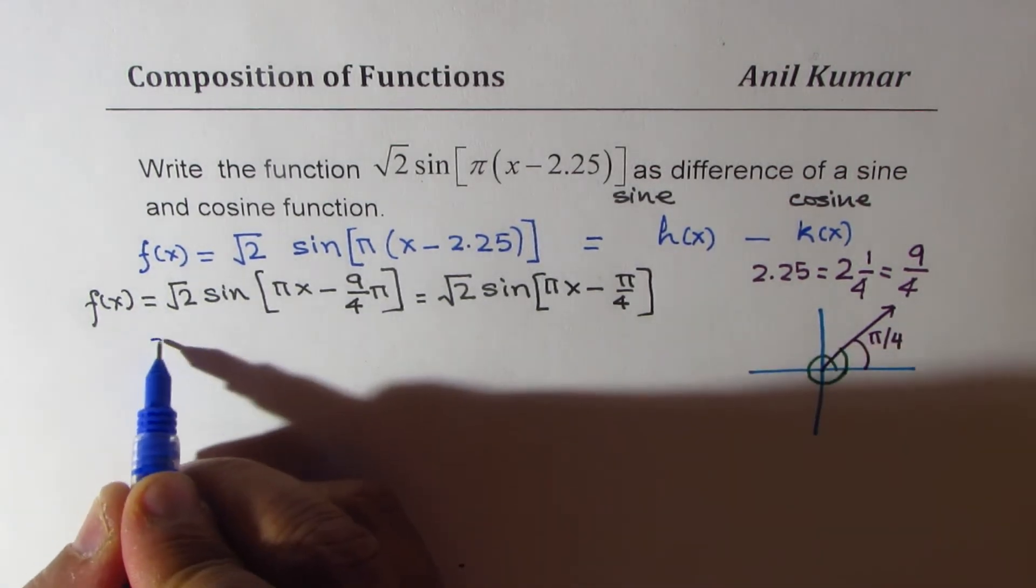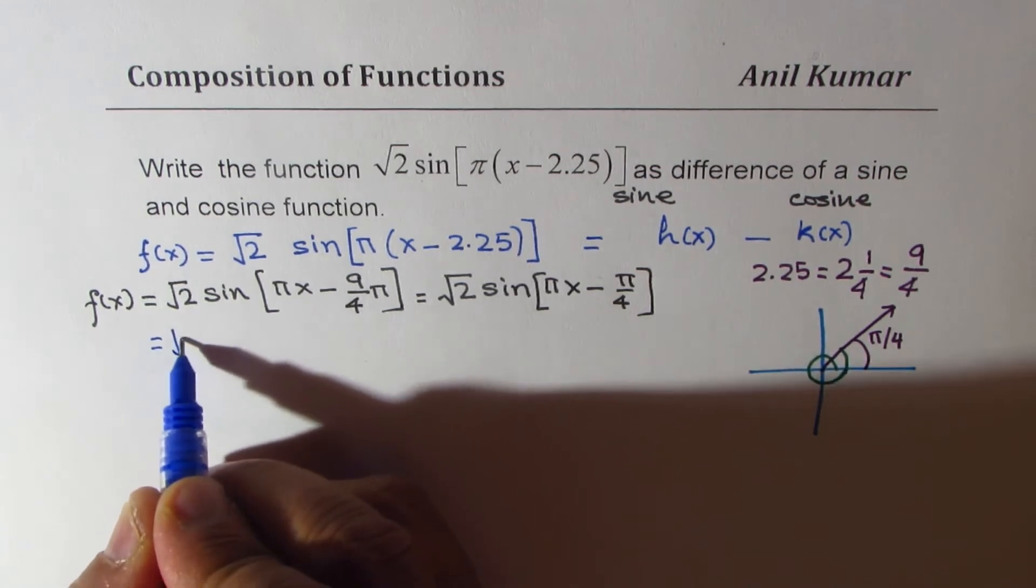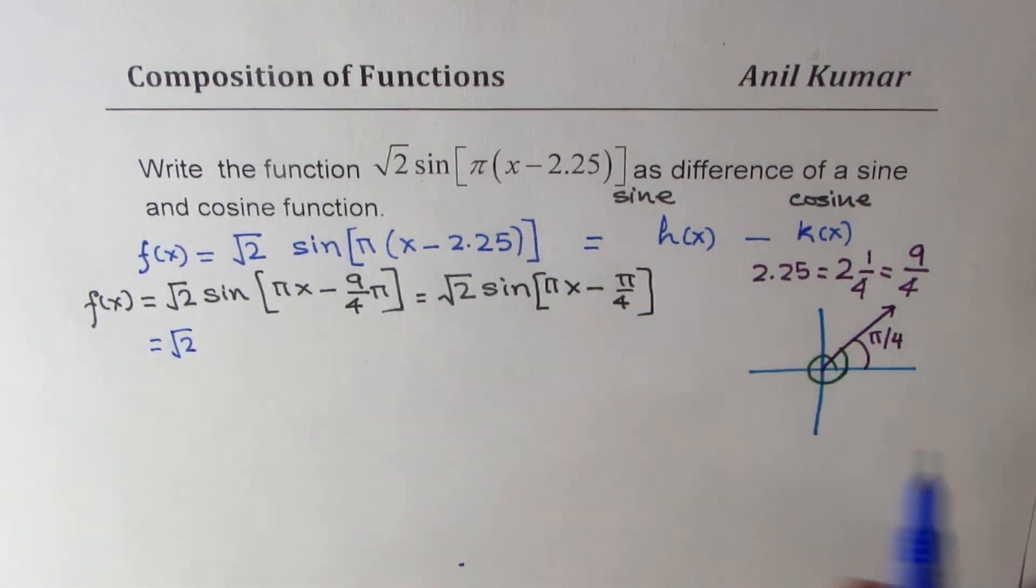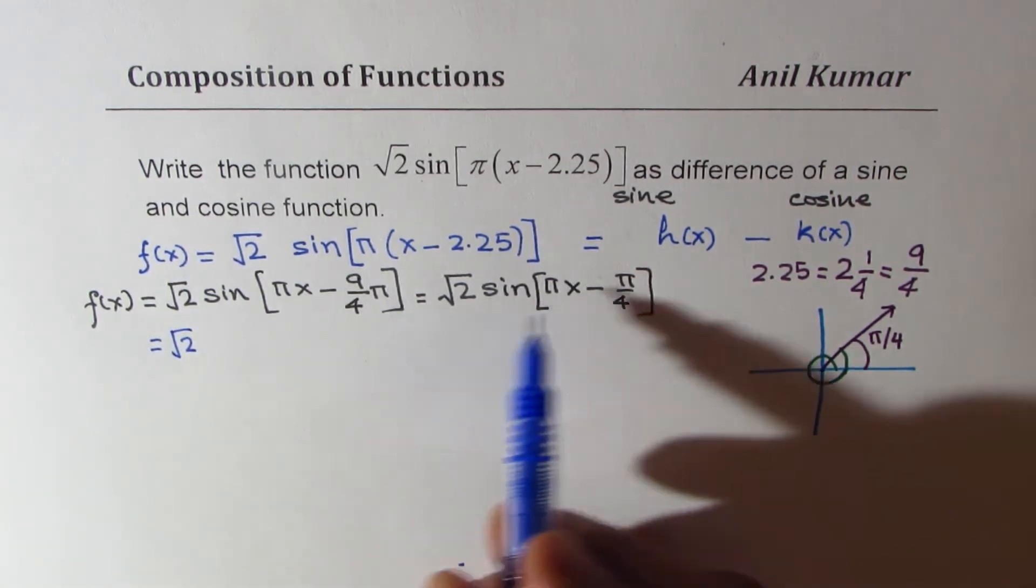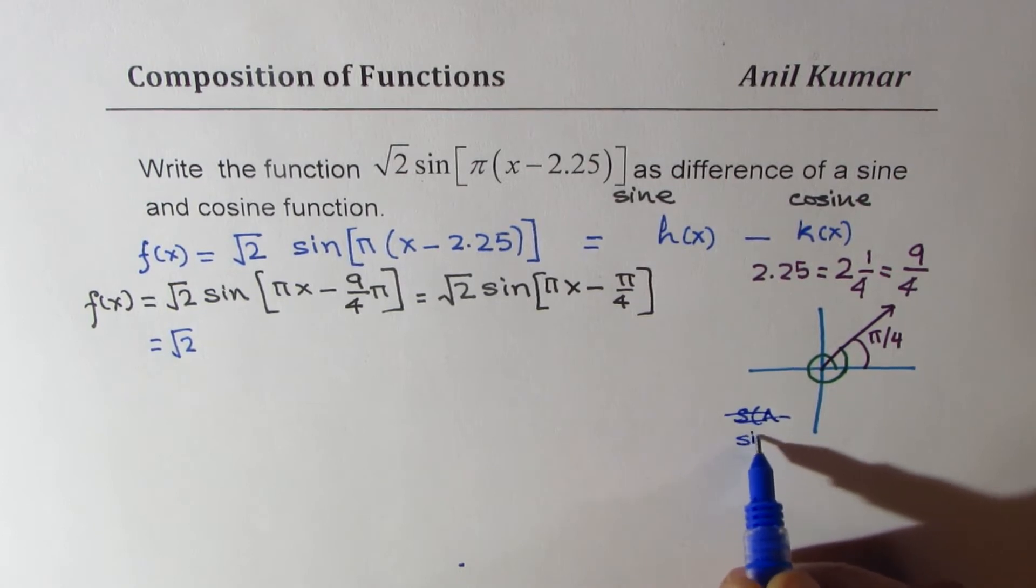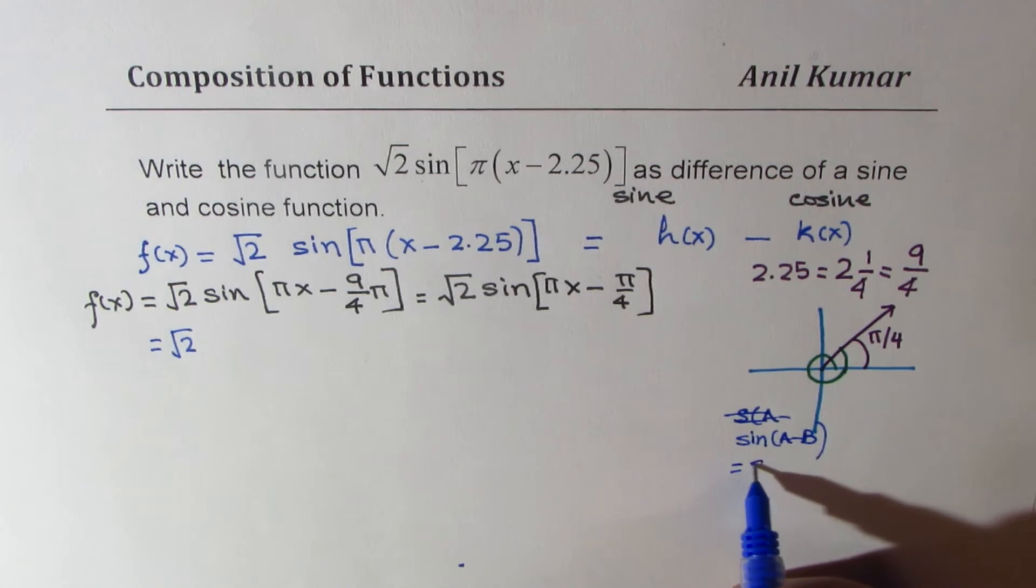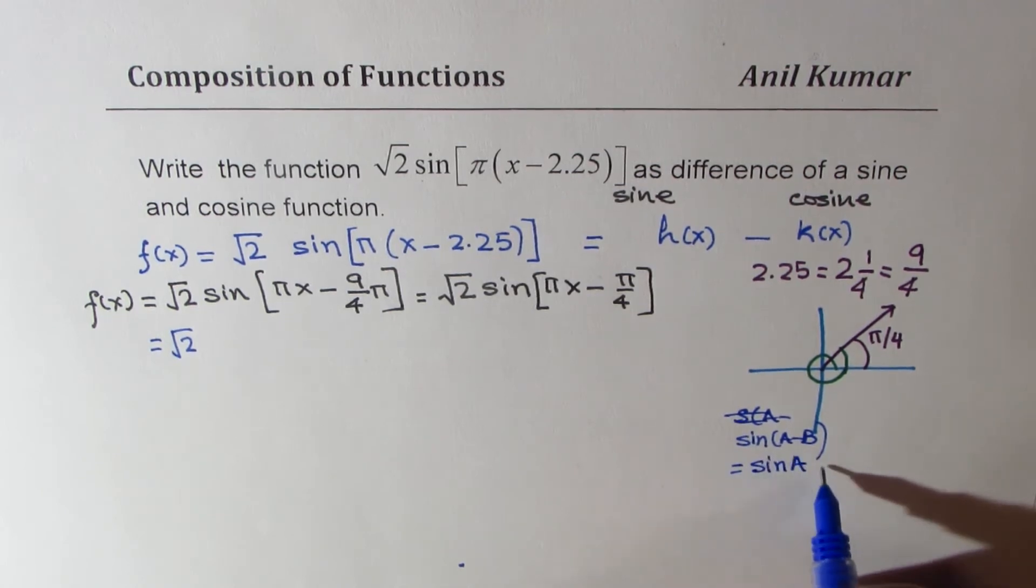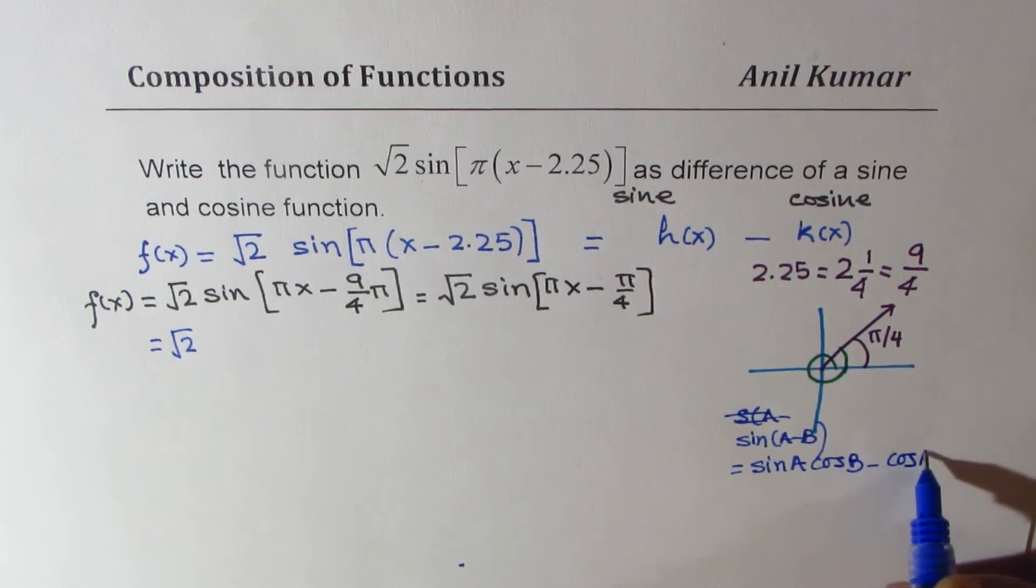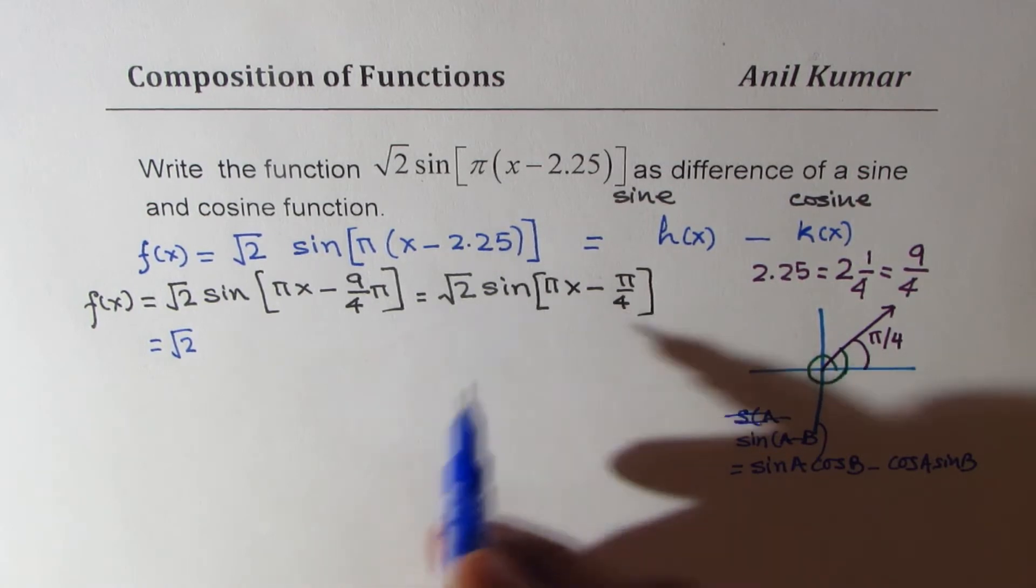Now we'll just apply the rule which you know, sine of a minus b. So we'll apply that. Let me write, sine of a minus b, it means sine a cos b minus cos a sine b. Perfect. So that is what we are going to do. Just expand.